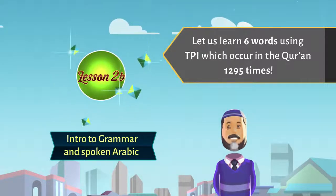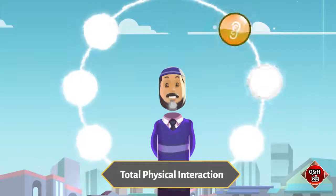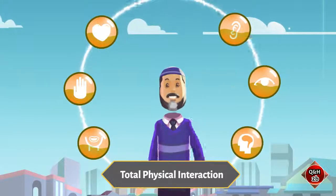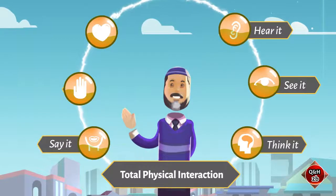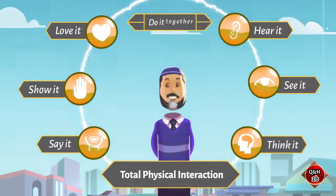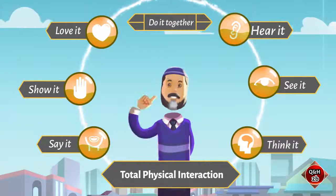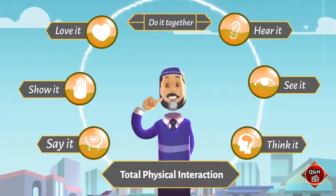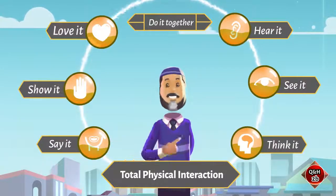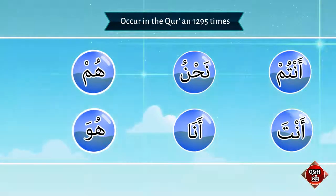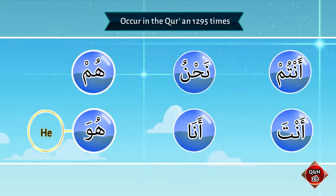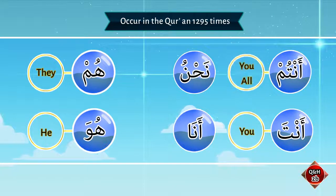These six words occur 1295 times. Using TPI — hear it, see it, think it, say it, show it, love it, do it together. So let us learn: hua, hum, anta, antum, ana, nahnu — that is: he, they, you, you all, I, and we.